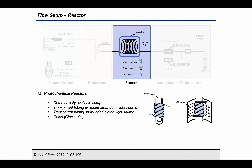The tubing material should be chosen based on the selected wavelength of the light source and the cutoff of the reactor material itself.